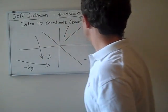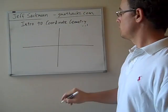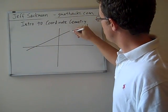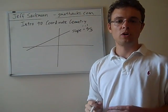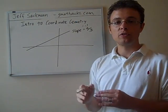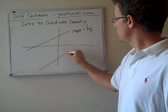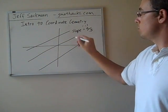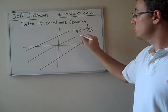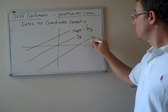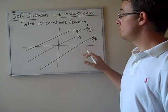One more thing about slope: notice the position of the line on the graph doesn't matter. If a line has a slope of two-thirds, it doesn't matter whether it's in one quadrant or another or right through the middle — all those lines are parallel. And if the lines are parallel, meaning the angle is the same relative to the axes, the slopes are the same.